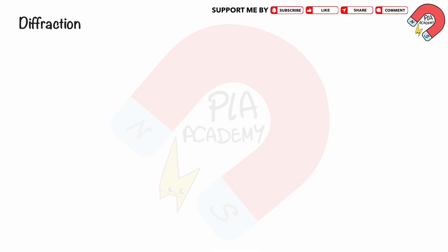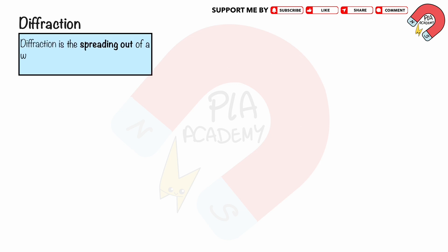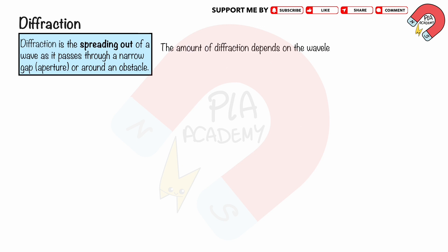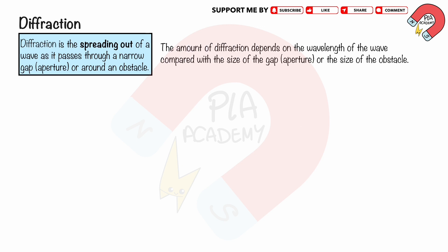Diffraction of Waves. Diffraction is the spreading out of a wave as it passes through a narrow gap, aperture, or around an obstacle. The amount of diffraction depends on the wavelength of the wave compared with the size of the gap, aperture, or the size of the obstacle.